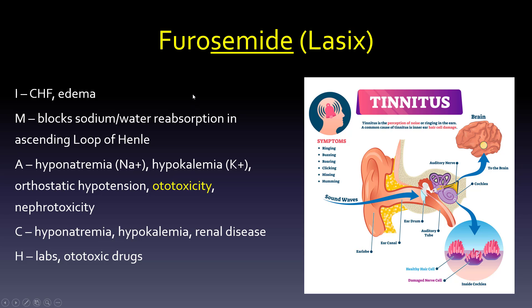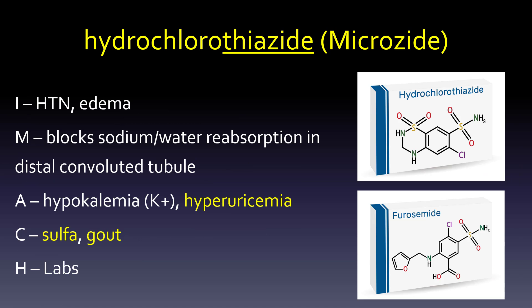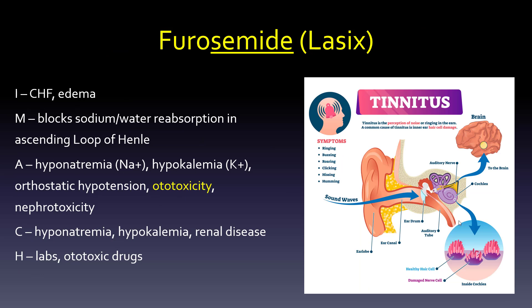Furosemide (Lasix) — 'pee furiously' — creates a lot of diuresis, though less than mannitol but more than hydrochlorothiazide. We've moved from the West Coast to the Midwest, meaning the ascending loop of Henle. Indications include CHF and edema, as opposed to hydrochlorothiazide, which treats hypertension, a lesser-severity condition. So we use furosemide for CHF and edema.